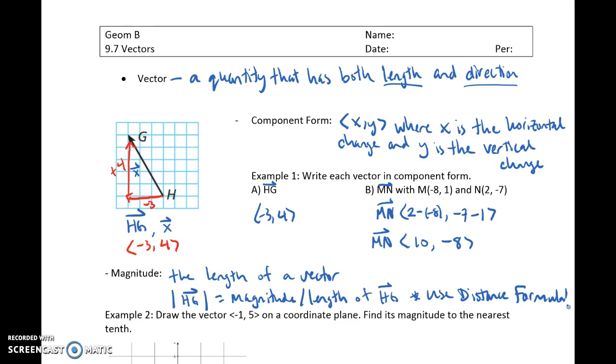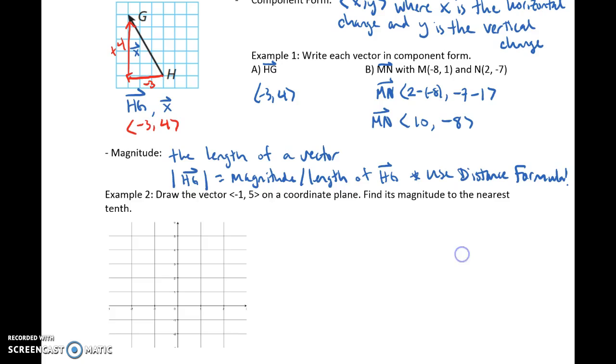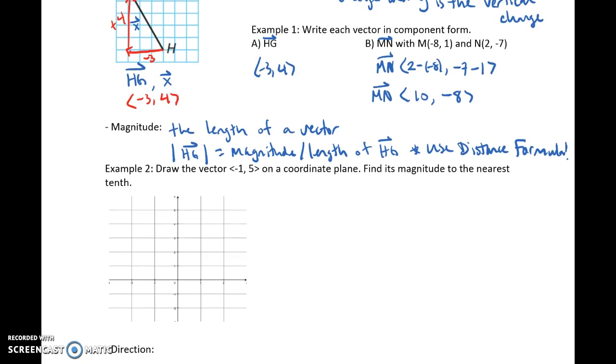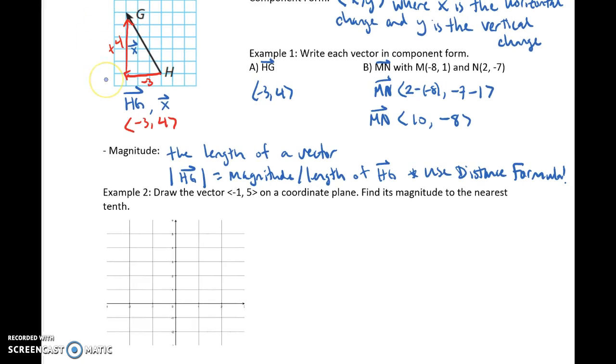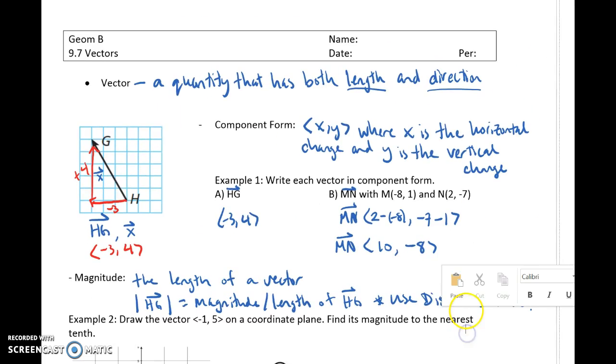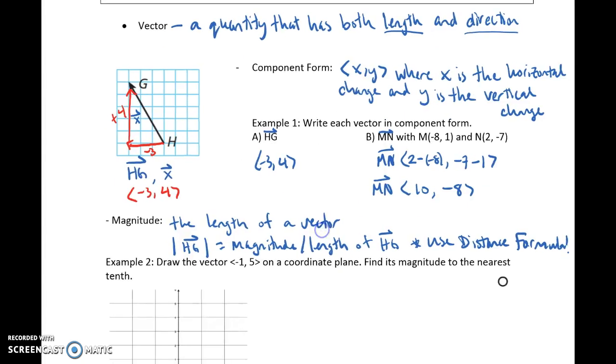So if we take a look at example 2, we're going to draw out this vector and then find the magnitude to the nearest tenth. And this magnitude and direction is going to help us notice how, just giving you a preview, this creates a right triangle. It's going to connect us back to trig when we're looking at specific situations.